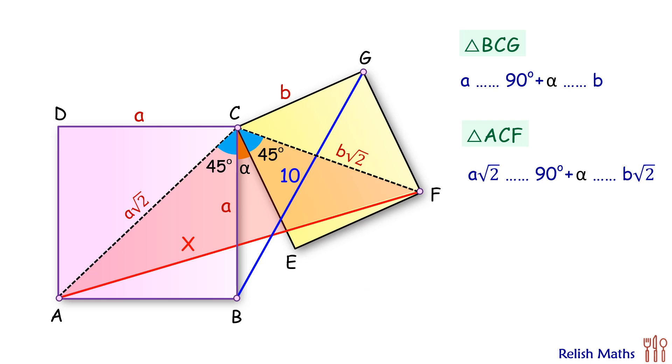So here the third side is BG. BG is 10 centimeters, and the third side here, AF, that is x. That ratio will be 1 to √2, or we can say that x is nothing but 10√2 centimeters, and that's our answer.